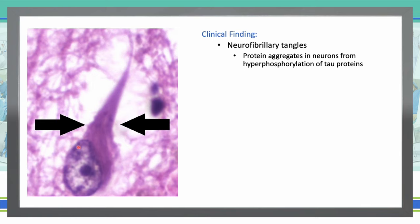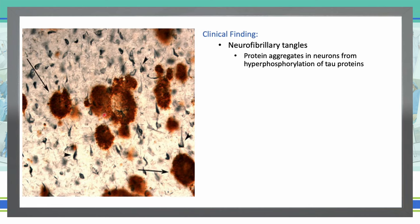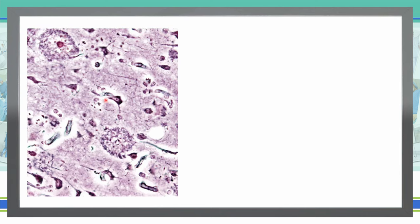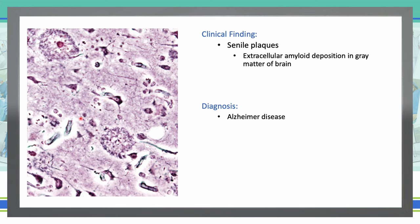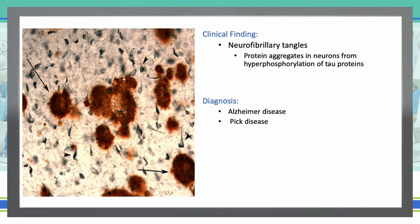Neurofibrillary tangles are protein aggregates in neurons from hyperphosphorylation of tau proteins. We see those in Alzheimer's disease and Pick's disease. On histology, we have A-beta plaques shown in brown, neurofibrillary tangles as dark brown tangles, and amyloid A-beta protein. Senile plaques represent extracellular amyloid deposition in the gray matter of the brain — different color staining can be used in the exam.